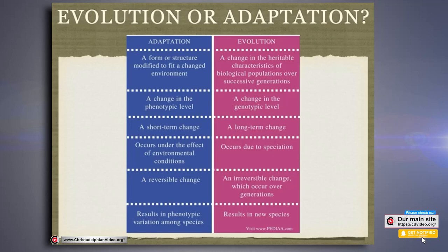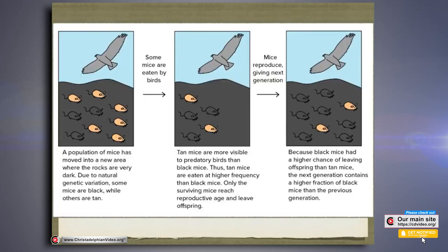Here is an example of adaptation. On the picture on the left, we've got a population of mice — both brown or tan and black — and they move to a place where the rocks are very dark. Because of that, the tan mice are more visible and so they get eaten by the birds more regularly. Over years and generations, there are more black mice because the tan mice were more noticeable on the black rocks. That's nothing to do with evolution — it's just the environmental impacts on the mice in that particular area.